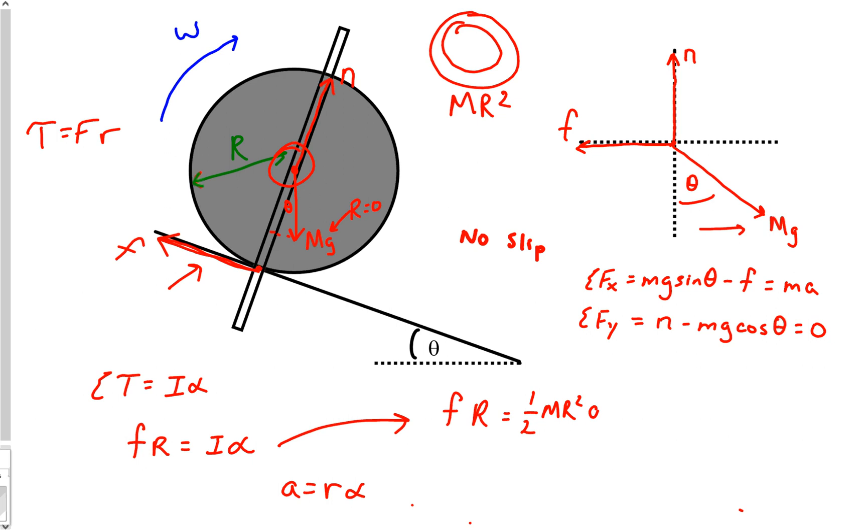Once again we know that a is equal to rα, so that means that a over r is our α. And just like all the other problems, r² and r cancel. So look at what we're left with - we're left with f is equal to one-half of ma.